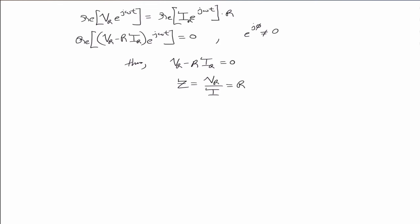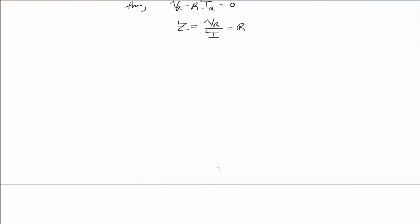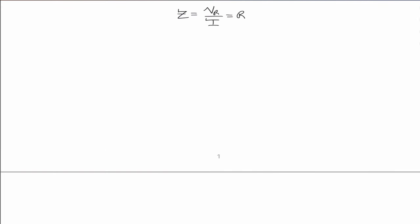We can then go on to the inductor. The voltage across an inductor in the time domain is related to the current through that inductor by the following expression: V_L(t) = L · dI/dt.